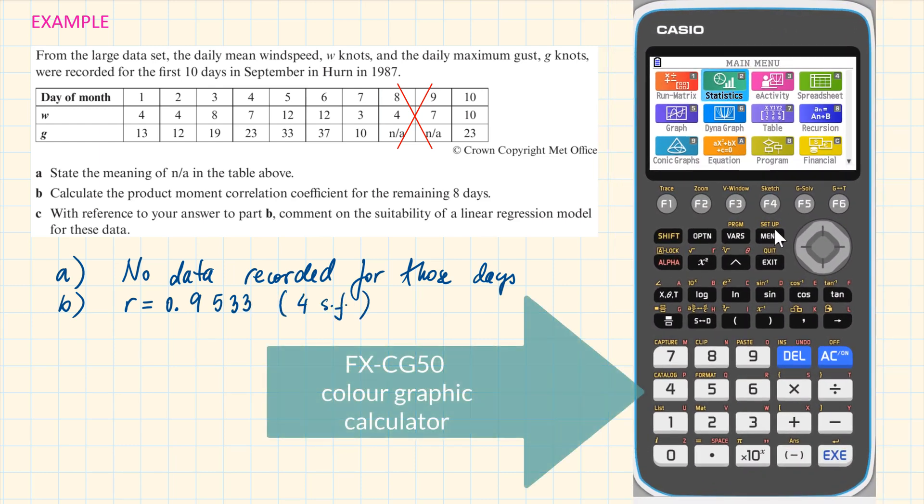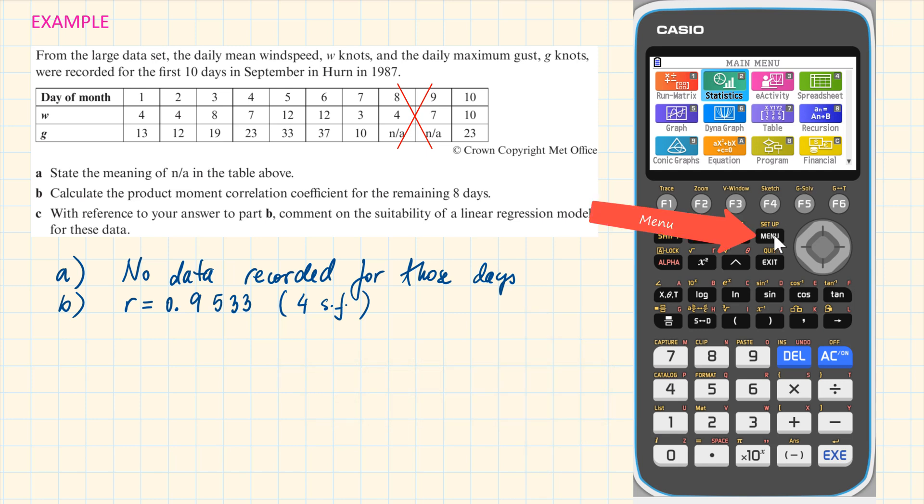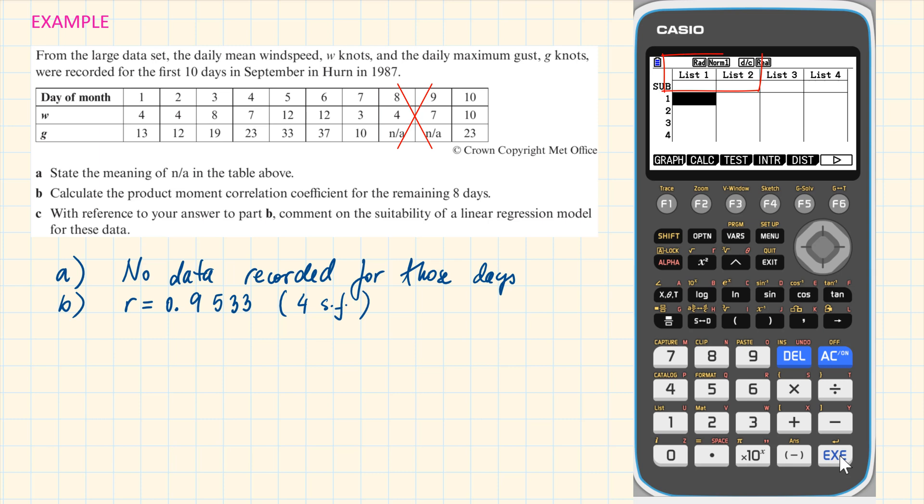On the graphical calculator, we start the same way. Press menu, then find statistics. We are only interested in list 1 and list 2, so let's input these values.